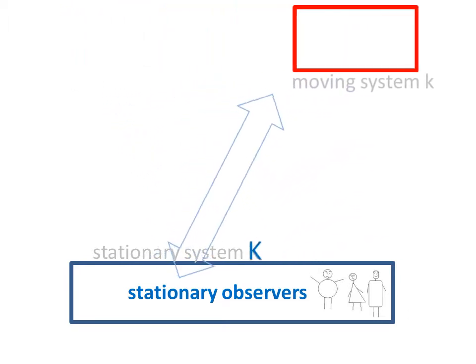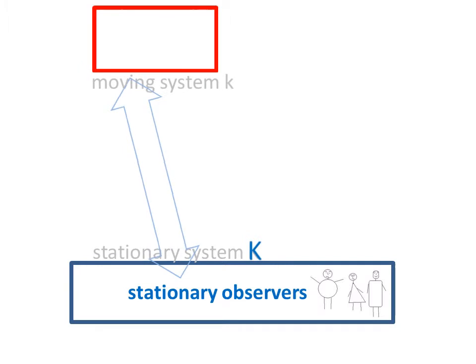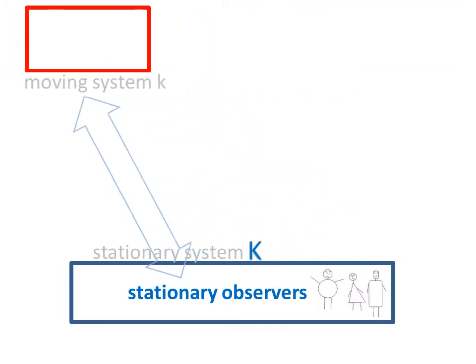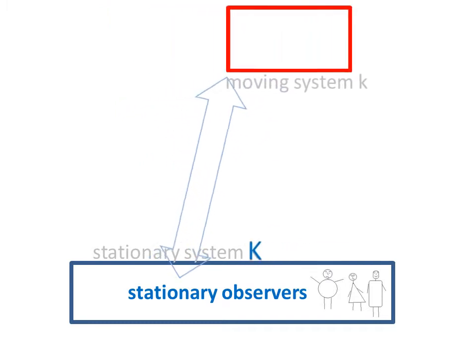what the observers in the moving system k think observers in the stationary system K see, measure.